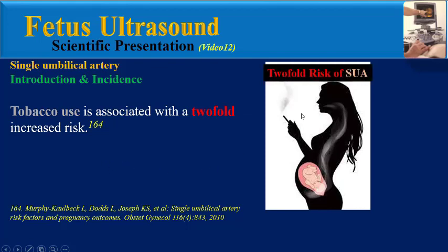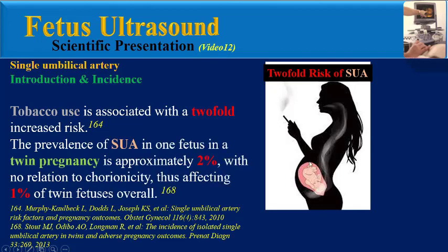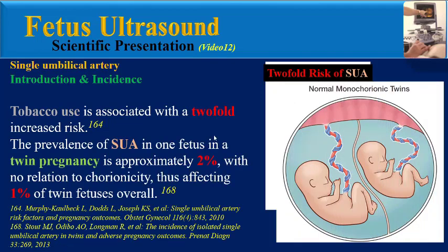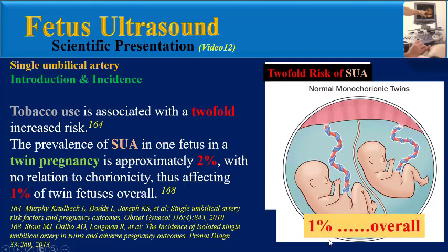In some but not all reports, absence of the left umbilical artery is more strongly linked with structural anomalies or aneuploidy. Tobacco use is associated with a two-fold risk of single umbilical artery. The prevalence of single umbilical artery in one fetus of a twin pregnancy is approximately two percent, with no relation to chorionicity, thus affecting one percent of twin fetuses overall.